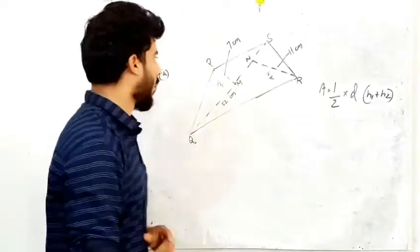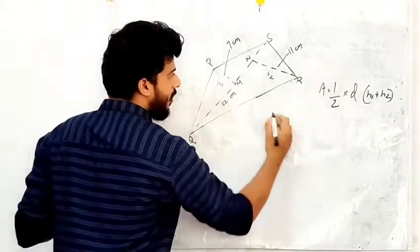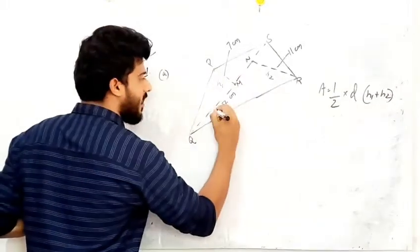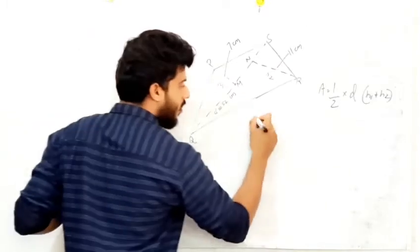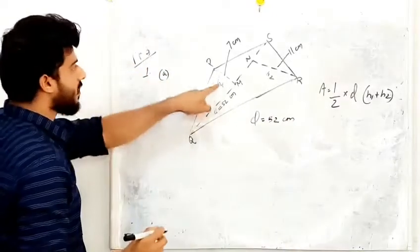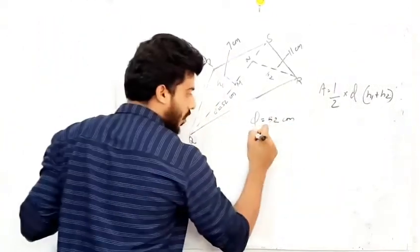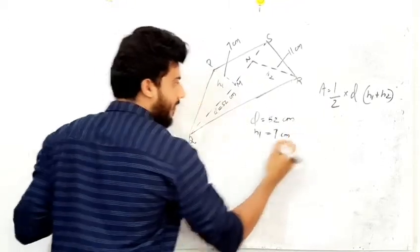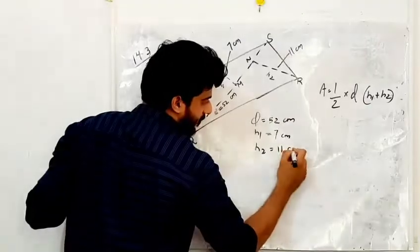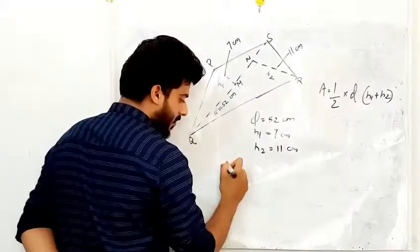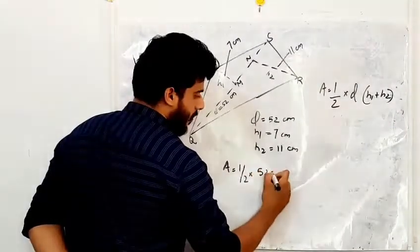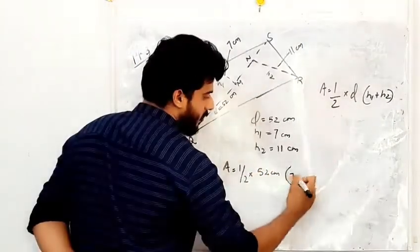Now we find the area using the equation A = ½ × d × (h1 + h2). What is d? d is given as 52 cm. What is h1? h1 is given as 7 cm. What is h2? h2 is given as 11 cm.